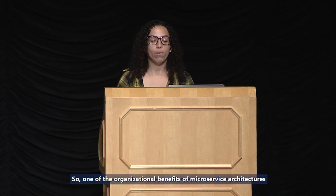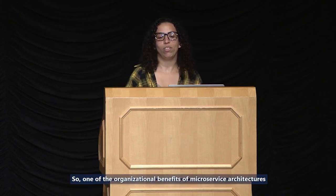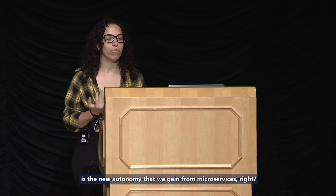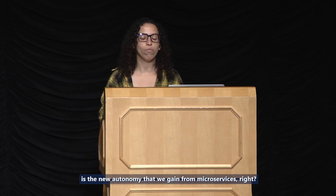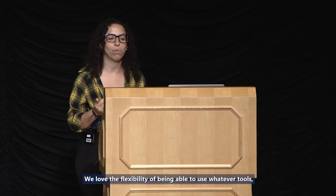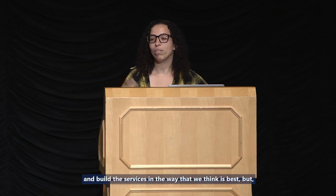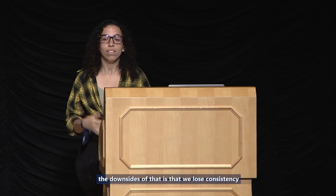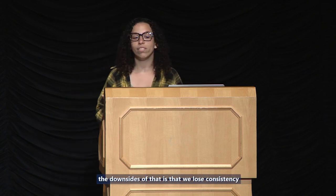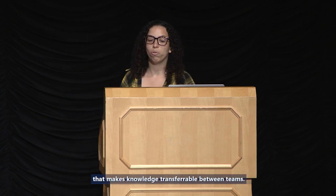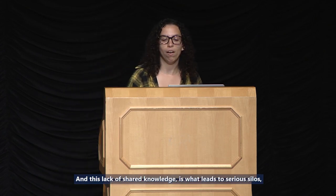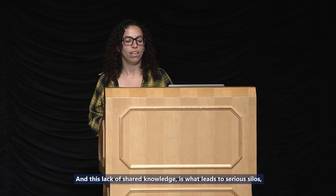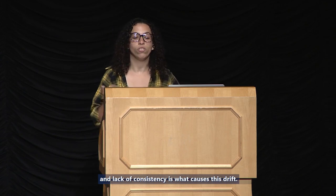One of the organizational benefits of microservice architectures is the autonomy we gain — we love the flexibility of being able to use whatever tools and build services in the way we think is best. But the downside is that we lose the consistency that makes knowledge transferable between teams. This lack of shared knowledge is what leads to serious silos, and the lack of consistency is what causes this drift.